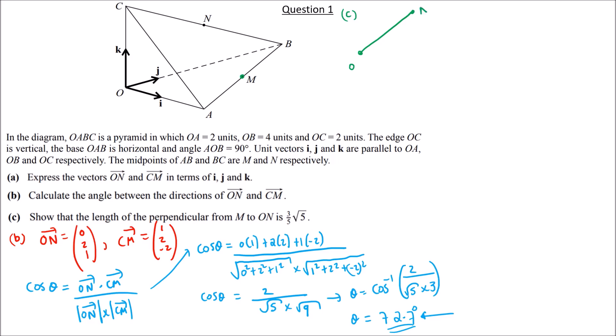The perpendicular from M to line ON meets at foot F. We need to find the length of FM. First, we find coordinates of M using vector OM = OA + AM.